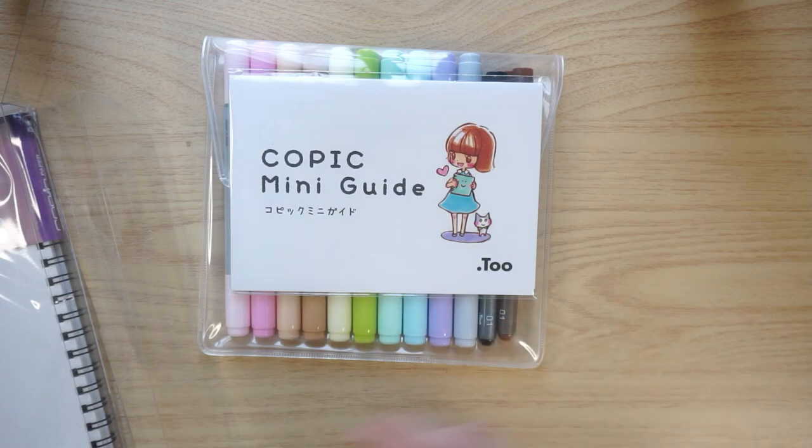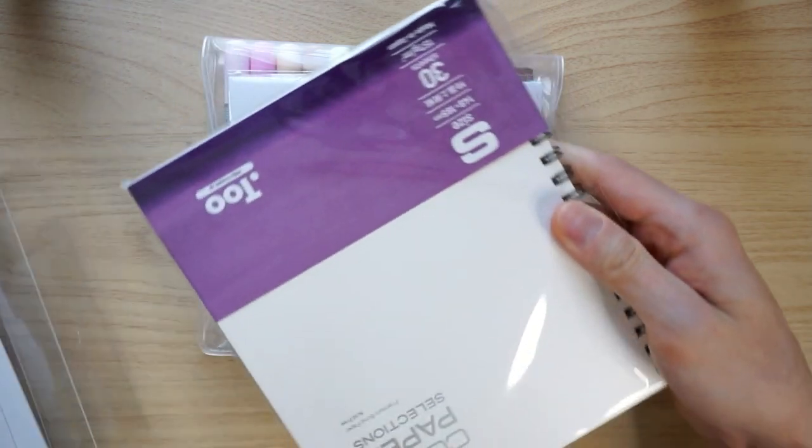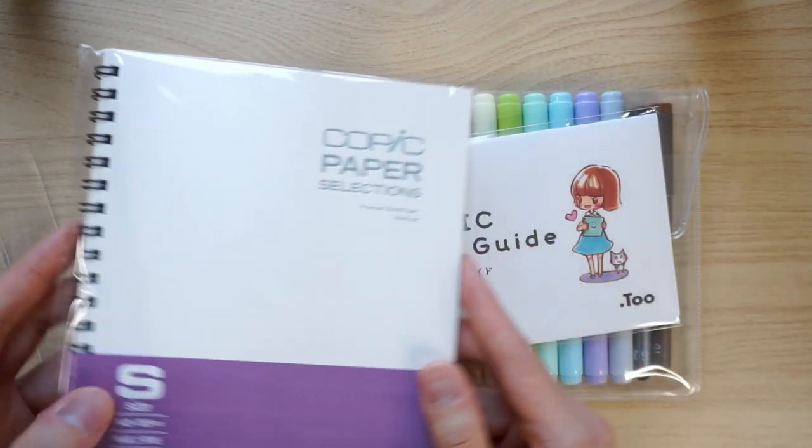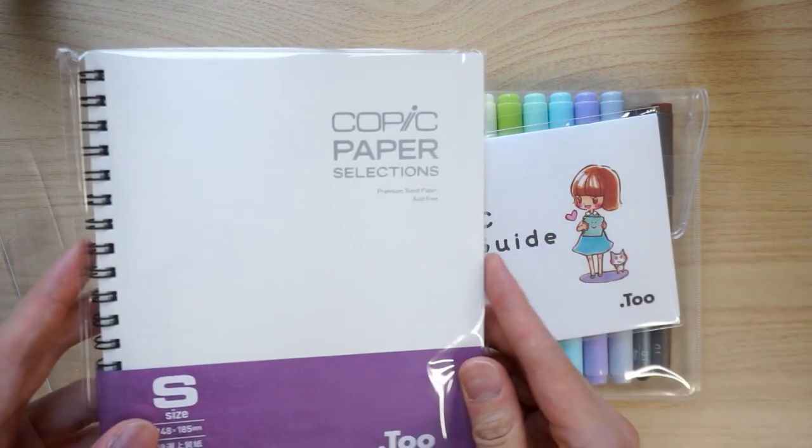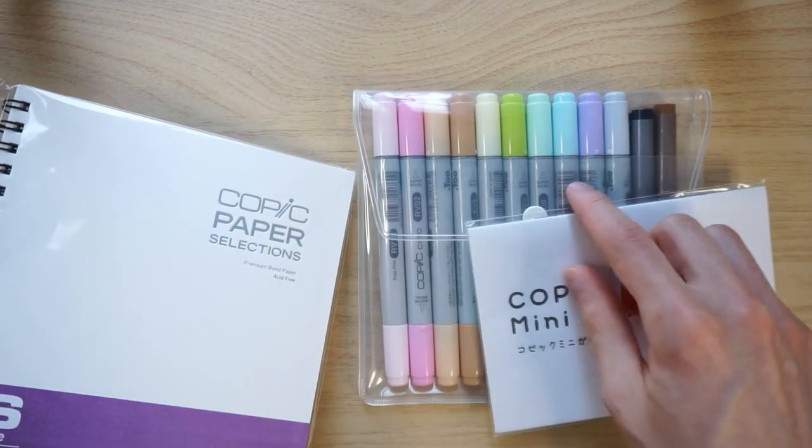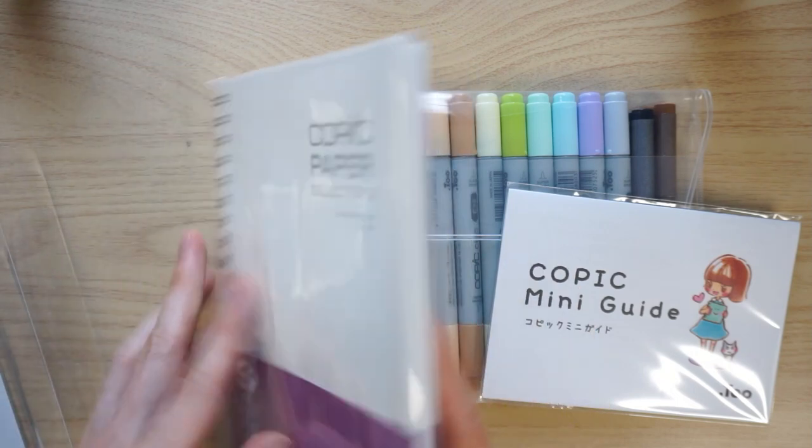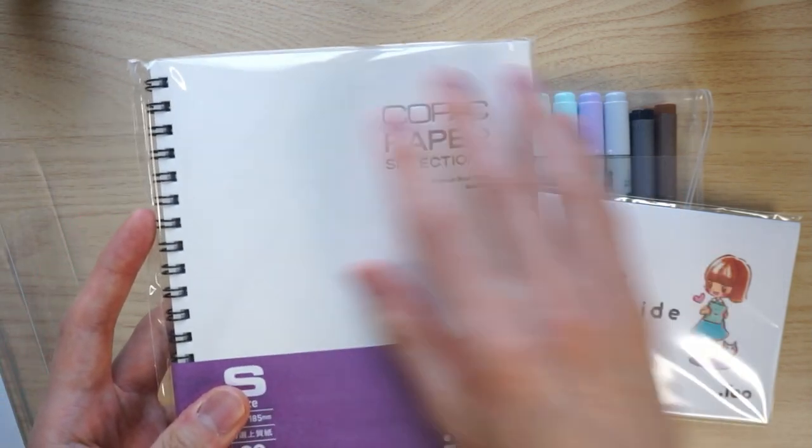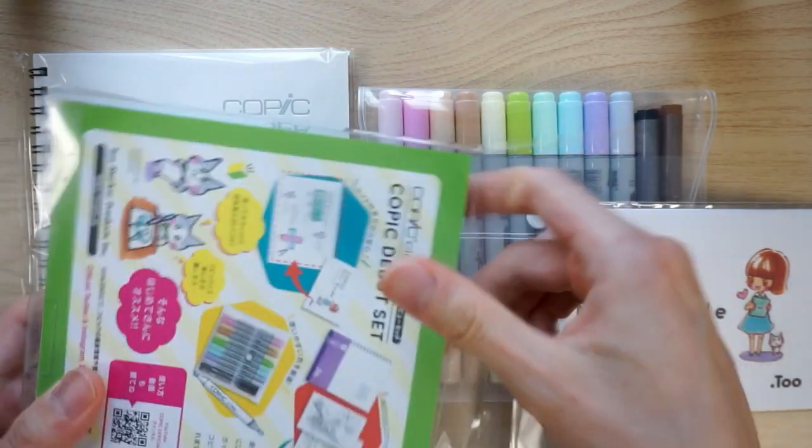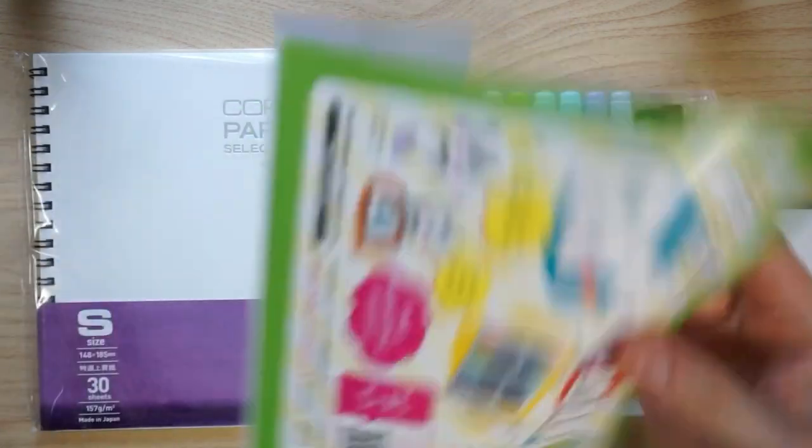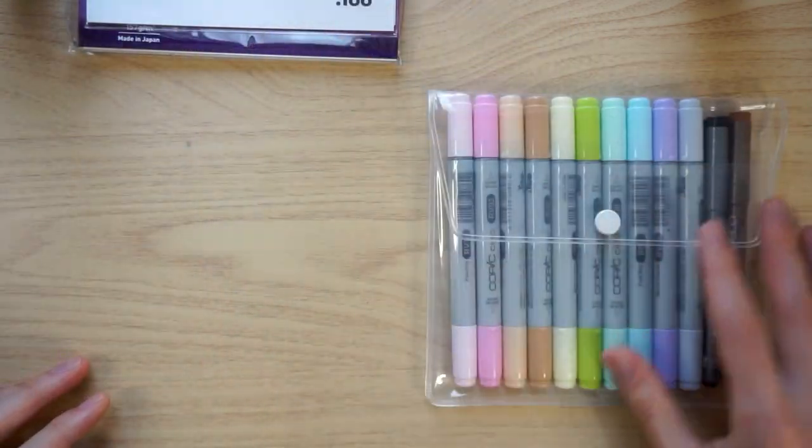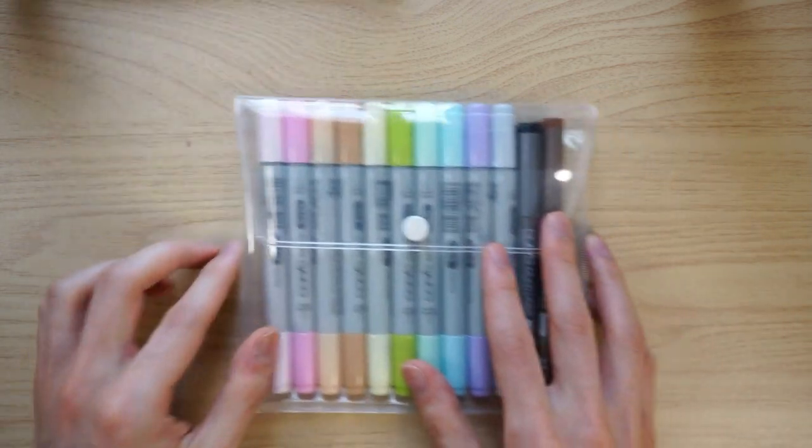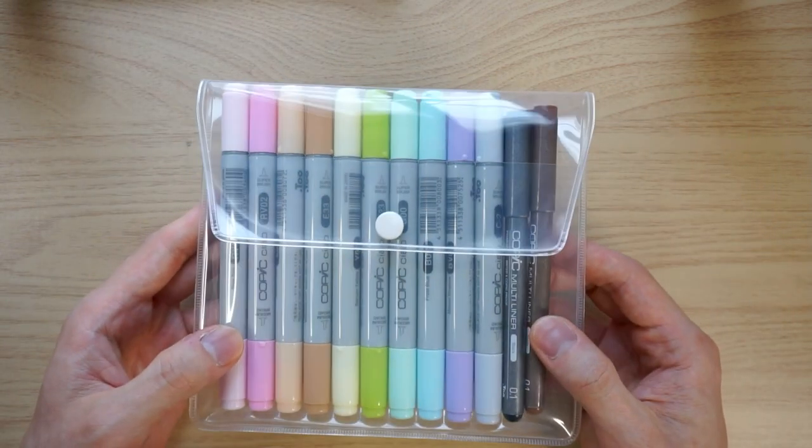So we've got the main package with the 10 pens and the two multi liner pens. We've got this Copic mini guide. Oh, we have some blank paper. Oh, this is nice. I think this is going to be important because if you've only ever done pencil and pen sketches, when you get into coloring, especially with these alcohol-based markers, you may find that you want thicker paper so that the paper doesn't just fall apart as it gets wet. And that appears to be everything that's included in the box. So I'm going to put the paper and the mini guide away to the side here. Let's have a look at these nice pens.